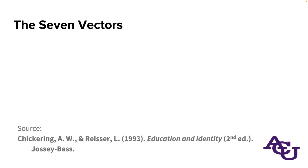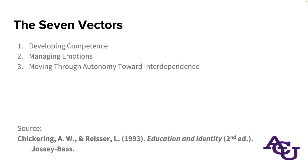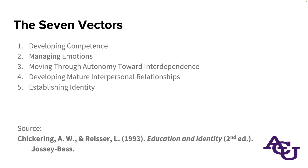The first version of this text was written by Chickering in the 1960s, and the 1993 one you'll usually see cited describes an updated, expanded, and refined version. The Seven Vectors enumerated in this source are: one, developing competence; two, managing emotions; three, moving through autonomy toward interdependence; four, developing mature interpersonal relationships; five, establishing identity; six, developing purpose; and seven, developing integrity. Make sure you are citing the version you're actually using, because there have been some fairly substantial changes over the years.